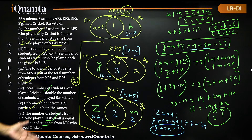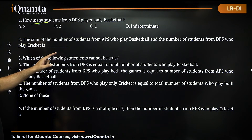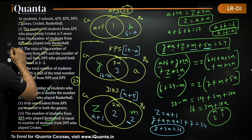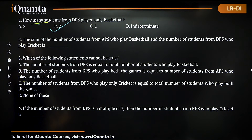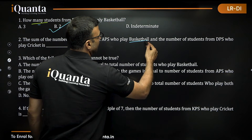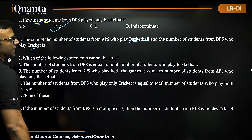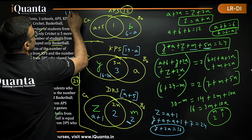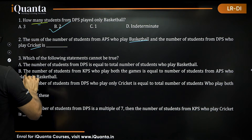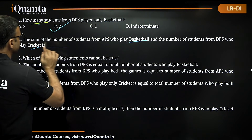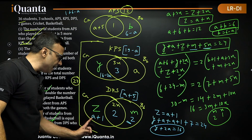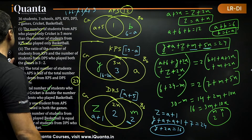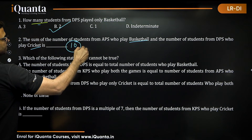Now let us answer the questions. How many students from DPS played only basketball? DPS only basketball is M, which equals 2. So the answer is option B. For the next question: the sum of students from APS who play basketball and students from DPS who play cricket. APS basketball is 1 plus (6 minus A), which is 7 minus A. DPS cricket is (A plus 1) plus 2, which is A plus 3. Adding them: (7 minus A) plus (A plus 3) equals 10. So that is also determinable: the answer is 10.